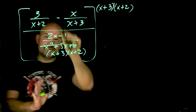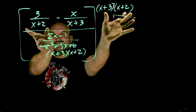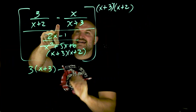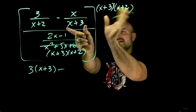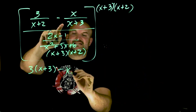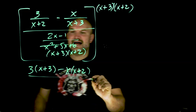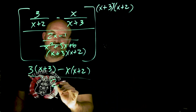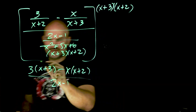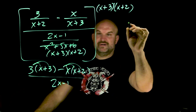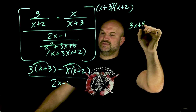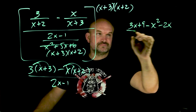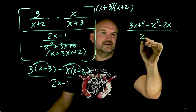Now here, we have a subtraction, so we're going to have to start being very careful. When I multiply this times this, my x plus 2s divide out, leaving me with 3 times x plus 3. Minus — when I multiply this times this, my x plus 3s divide out, so I'm going to have negative x times x plus 2. And then for my denominator, everything divides out, so that's just going to leave me with 2x minus 1.